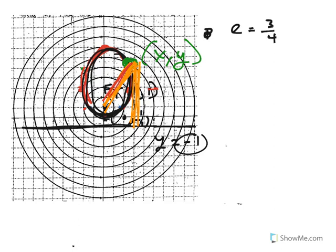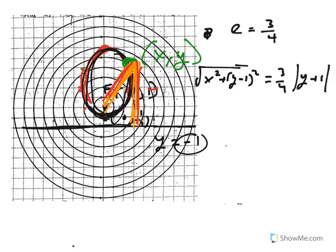So this distance here, using the distance formula, is the square root of X squared plus (Y minus 1) squared. It has to equal 3/4ths of this distance here, and that distance is Y minus negative 1 or Y plus 1. I put in an absolute value in case it's below the line.